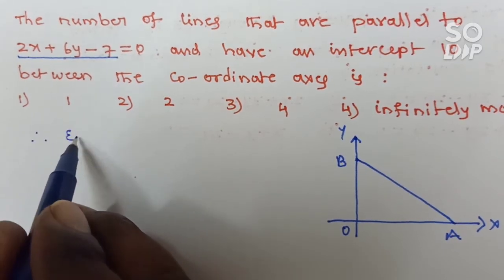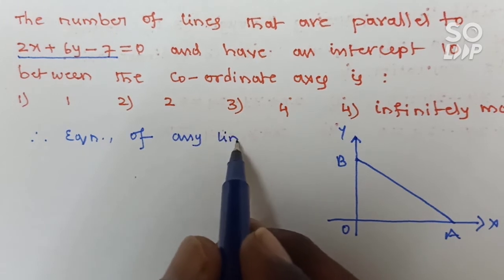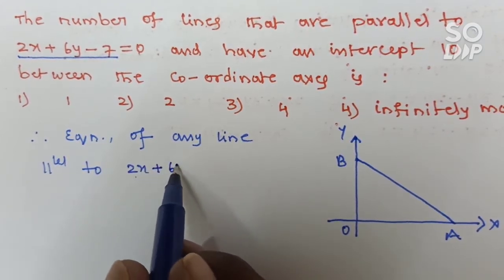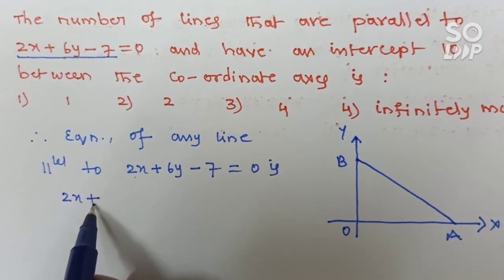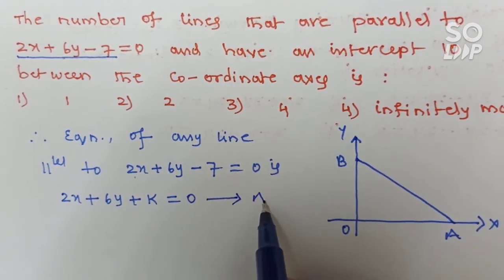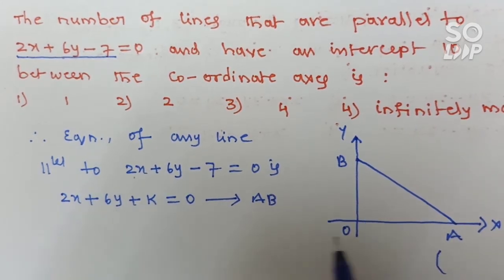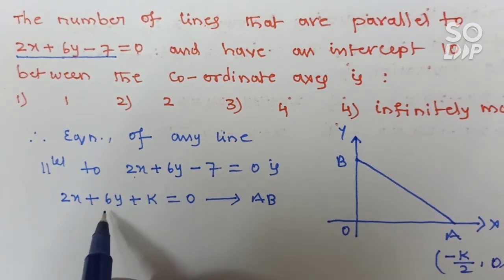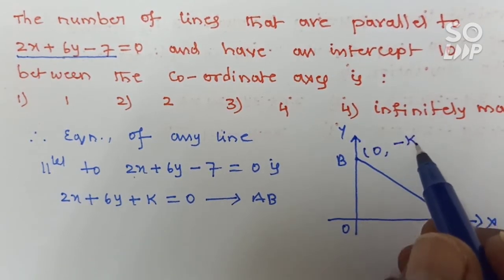This is the equation of AB. To find point A coordinates: set y equals 0, giving x equals −K/2, so A is (−K/2, 0). To find point B coordinates: set x equals 0, giving y equals −K/6, so B is (0, −K/6).